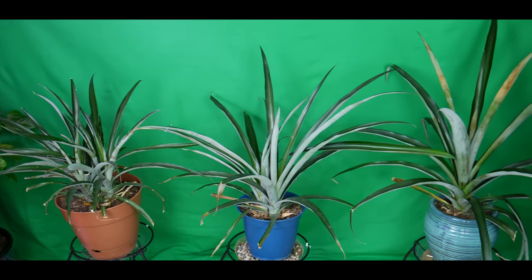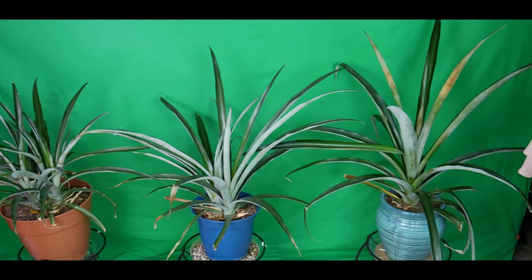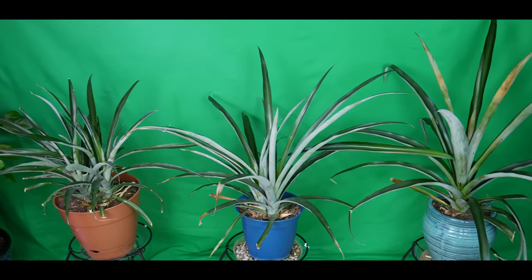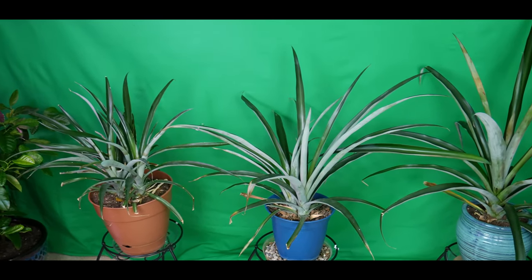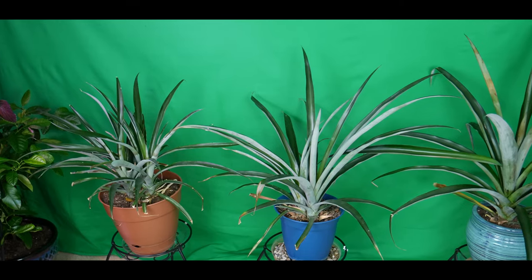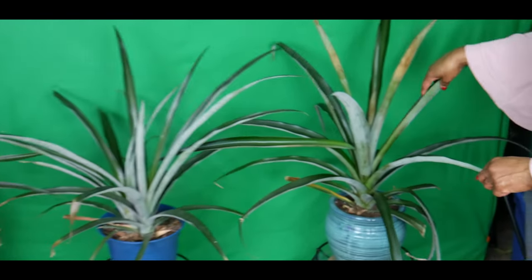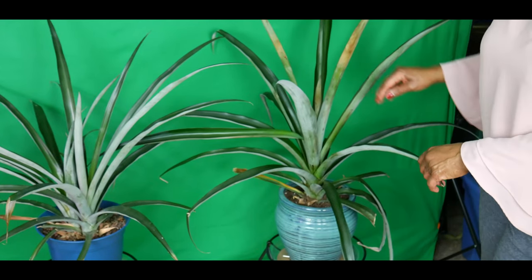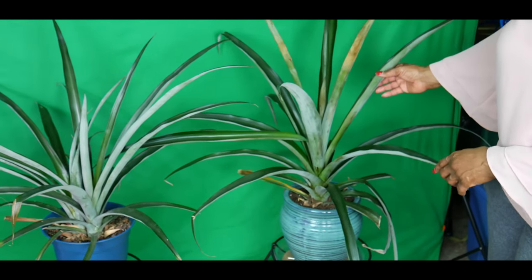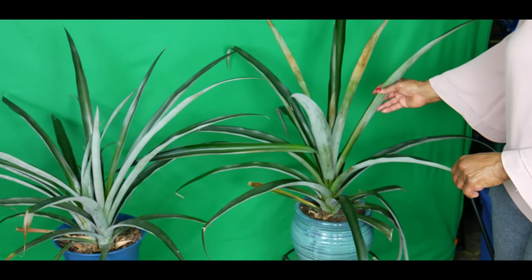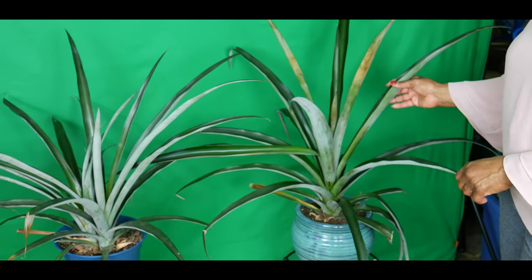In September I did a video on how to use overripe and rotten apples to produce ethylene gas, which is a ripening plant hormone to force this particular pineapple to fruit. If you check out my video above from about two months ago, you would be able to see the process I used.